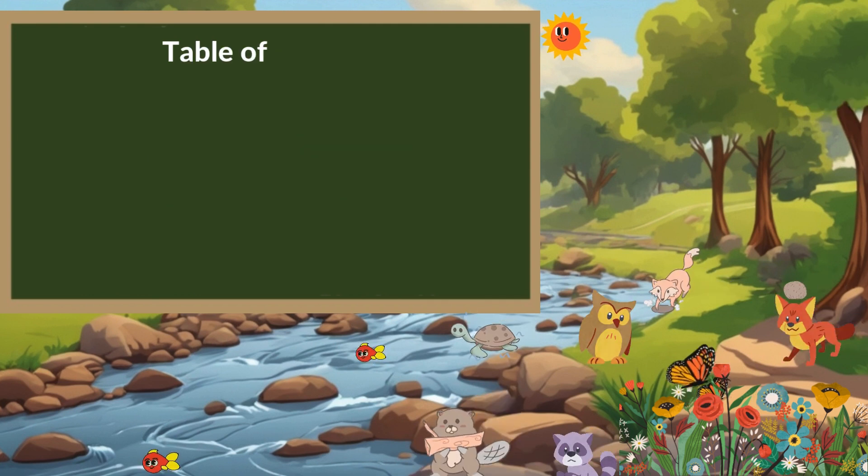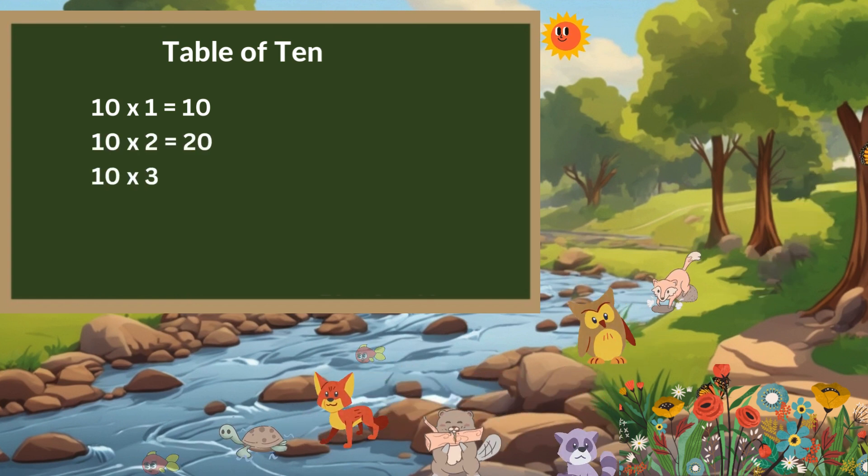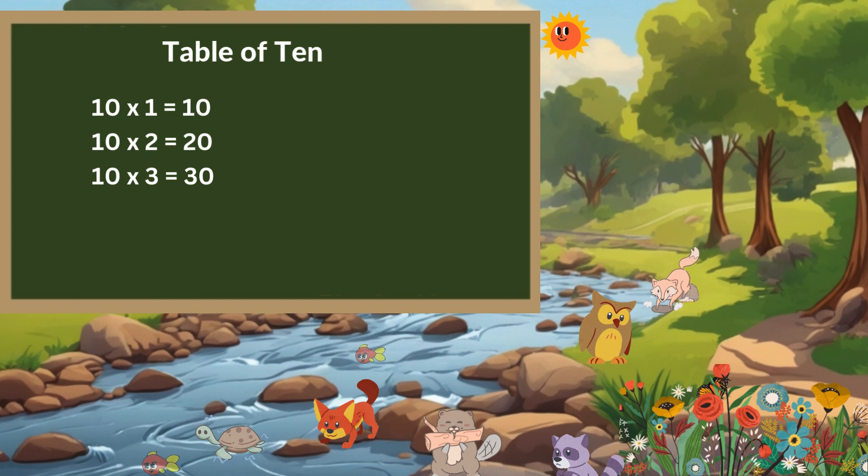Table of 10. 10 times 1 is 10. 10 times 2 is 20. 10 times 3 is 30. 10 times 4 is 40. 10 times 5 is 50.